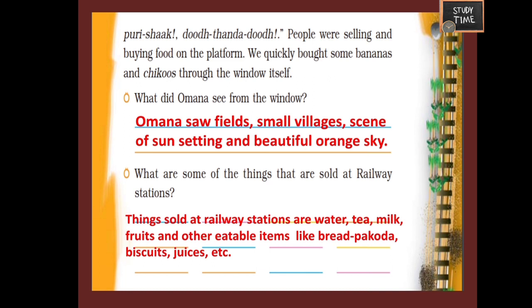Question: What did Omana see from the window? Answer: Omana saw fields, small villages, the scene of a setting sun, and a beautiful orange sky. Question: What are some of the things sold at a railway station? Answer: Things sold at railway stations include water, tea, milk, fruits, and other eatable items like biscuits and juices. You can write things which you know.